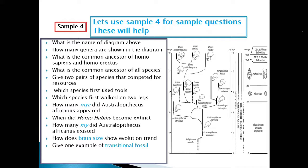Give one example of a transitional fossil. The answer is Australopithecus sediba — write it as a full scientific name: Australopithecus sediba. If they ask for a common name or scientific name, give whichever you find easier or whichever is specified.